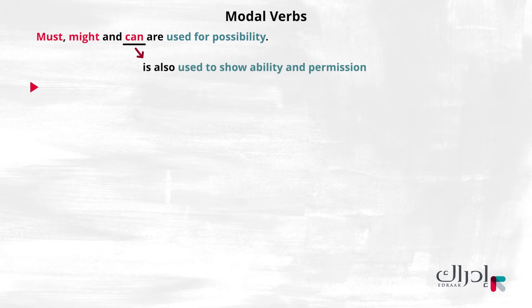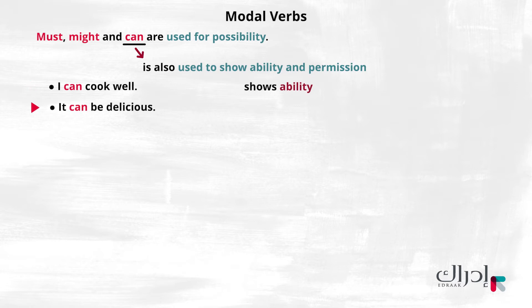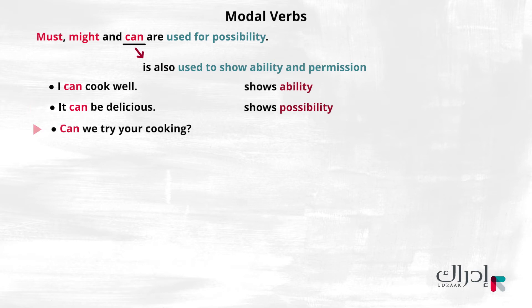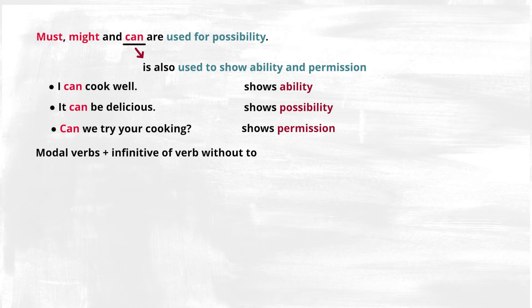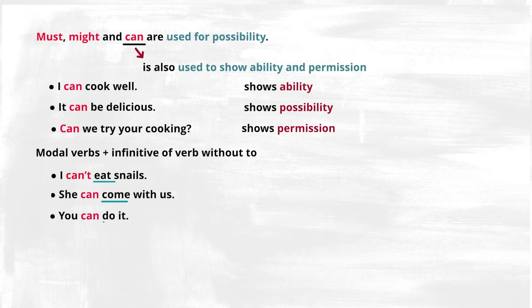For example, I can cook well shows ability. But it can be delicious shows possibility. Also, can we try your cooking is related to permission. Modal verbs are always followed by the base form of the main verb — the infinitive form without 'to'. Look at the sentences again: I can't eat snails. She can come with us. You can do it. We might leave in the morning. We won't be late.